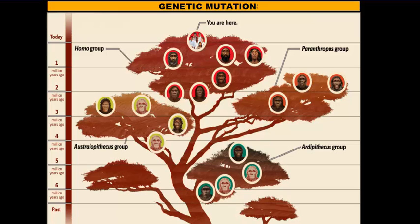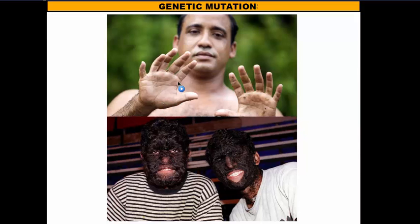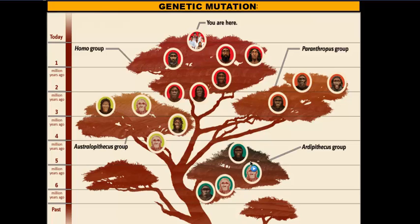Typically when people hear the word mutations, it has a negative connotation — something that is out of the ordinary. And in some cases, yes, they are. You can see conditions such as polydactyly, where you have extra fingers or digits on your hands — this gentleman actually has six fingers. Or you can have a condition known as hypertrichosis, which is excessive hair growth in areas that normally don't grow that much hair. Mutations can be bad where they can be fatal. However, mutations can also be beneficial, as we'll learn when we get into evolution.